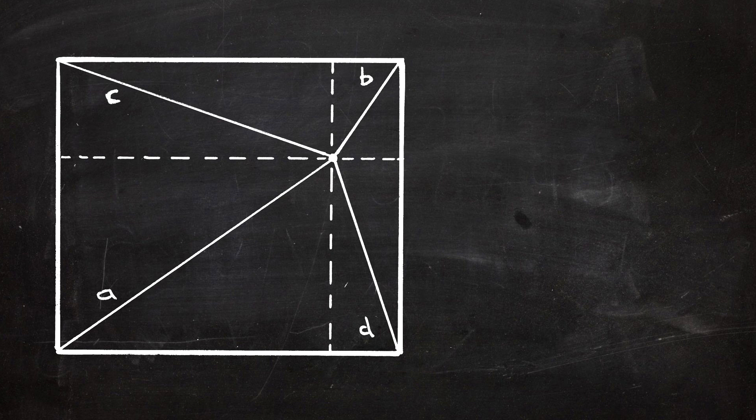We're going to label the split horizontal with W and X, and the split vertical line with Y and Z. Then good old Pythagoras will tell us that A squared equals W squared plus Z squared, B squared equals X squared plus Y squared, C squared equals W squared plus Y squared, and D squared equals X squared plus Z squared.